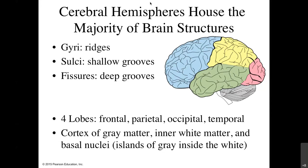The four lobes of the brain are easy to remember if you know your cranial bones, because they match. The frontal lobe is under the frontal bone; parietal lobes are on top; temporal lobes are on the side; and the occipital lobe is in the back. You can remember them with the acronym FPOT — touch the front (frontal), top (parietal), back (occipital), and over your ears (temporal).